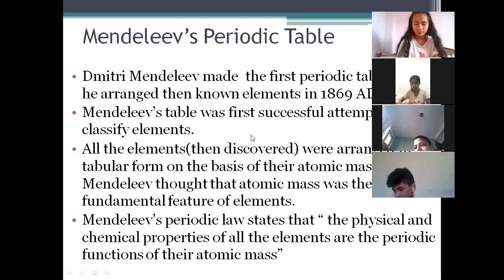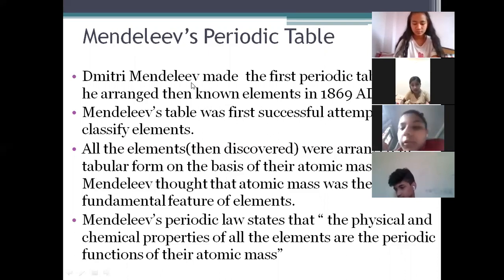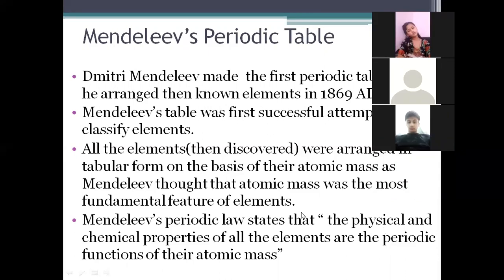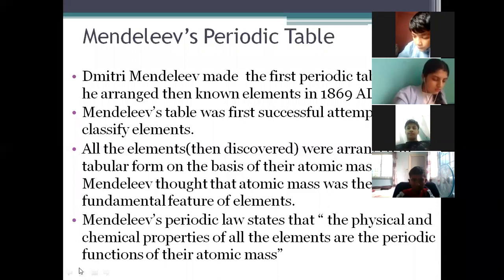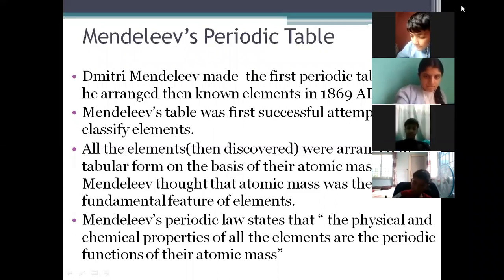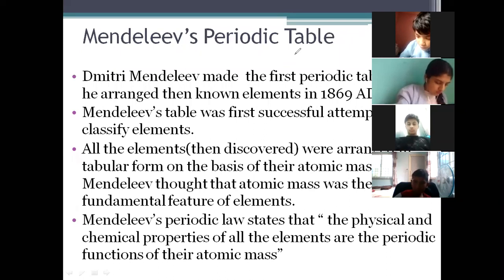At that time, it was obviously a kind of revolution — a huge success — to provide this type of classification system for elements. Before Mendeleev, chemists did not think about making a table and classifying all the elements. The atomic mass is very important to understand in this context.